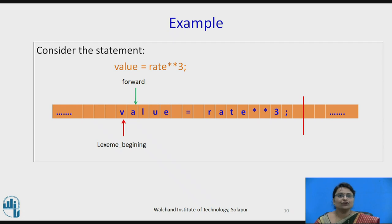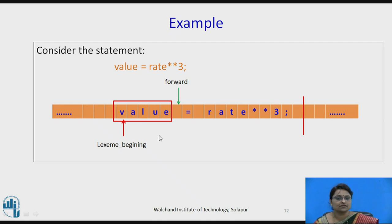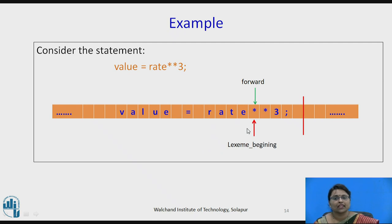The forward pointer initially points to 'v', then moves to 'a', and continues one by one. From the lexeme beginning to the end of the lexeme, a token is generated. For the next lexeme where 'rate' starts, the lexeme beginning points there and the forward pointer moves until it reaches the operator, forming the next token. Where no separator exists, the forward pointer and next lexeme beginning immediately point to the next token position.